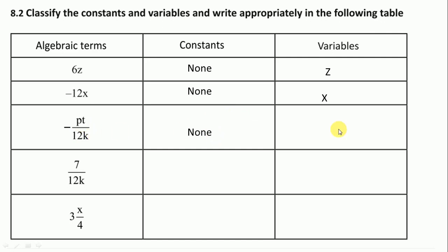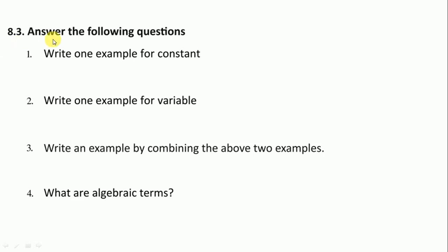And p, t, k are the variables. There is no constant here also and the variable is only k. And then the last one, there is no constant, and the variable is x.